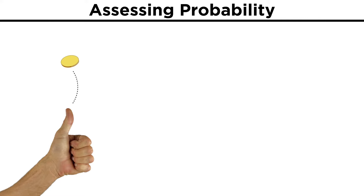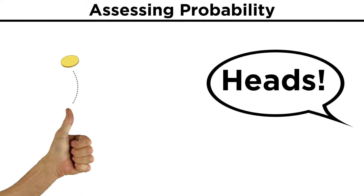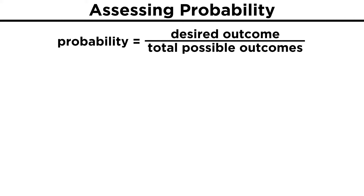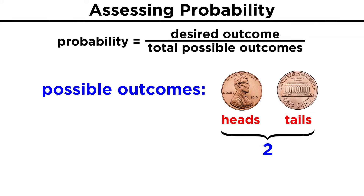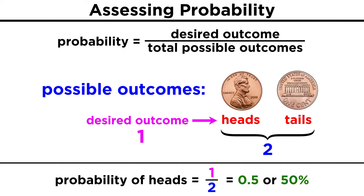Let's take something very simple, like the flip of a coin. When you flip a coin and call it in the air, predicting heads instead of tails, you are making a prediction about what will happen. We can assess the probability of that event happening by taking a number that represents your desired outcome and dividing it by a number that represents all the possible outcomes. In this case, there are two possible outcomes: heads and tails. Only one represents your desired outcome, so the theoretical probability of success, if the coin is fair, is one out of two, which we represent as a fraction. This could also be expressed as a decimal, like 0.5, or as a percentage, like fifty percent. All three are saying the same thing: there is a one in two chance, or a fifty percent probability that you will win this coin toss.